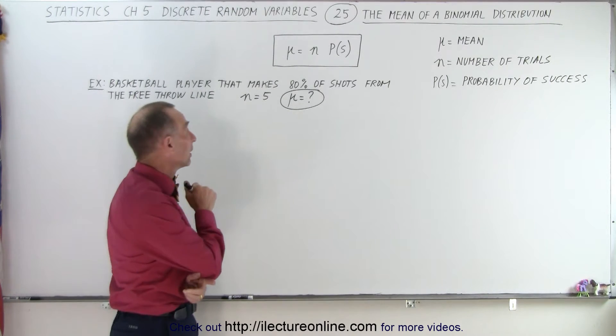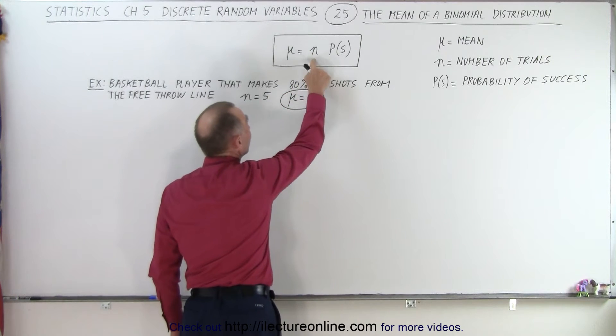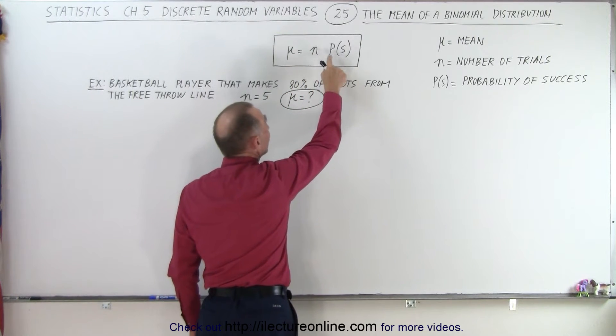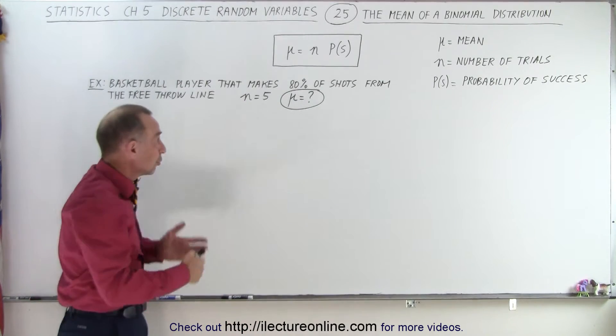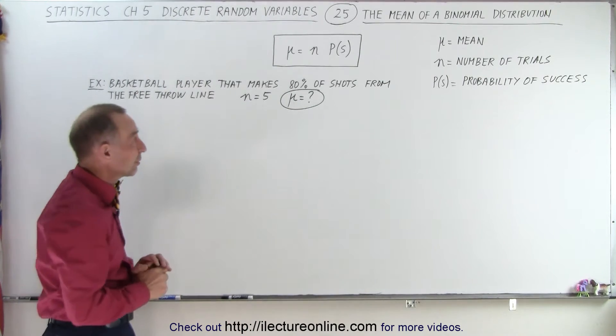Here's how we do that. The mean or average is the number of attempts times the probability that the attempt will be successful. In this case, we're going to do an example because that's the easiest way to explain it.